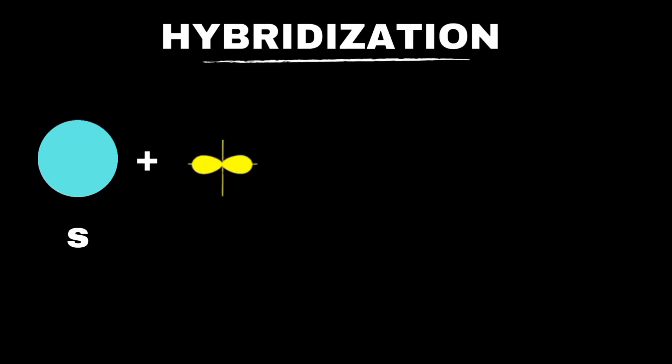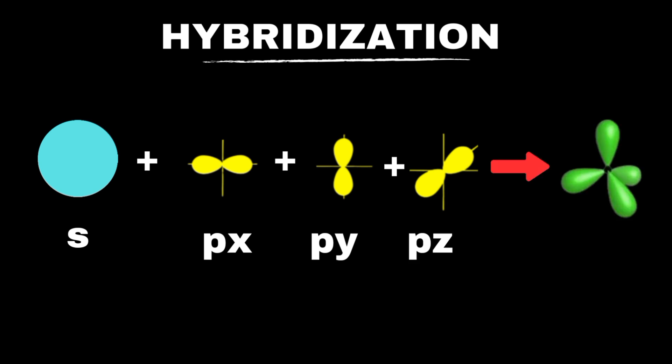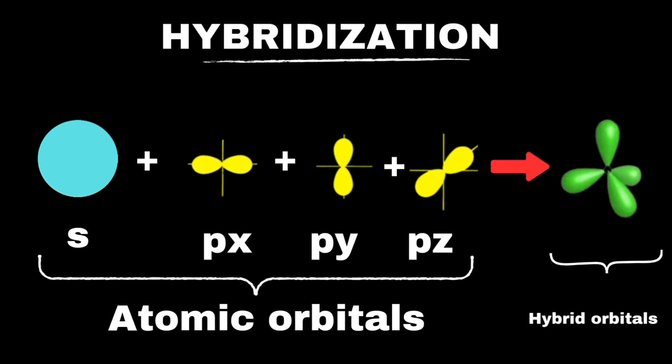Hybridization is the process in which atomic orbitals with different shapes and energies mix to form a new set of equivalent orbitals, known as hybrid orbitals, which have the same shape and energy.